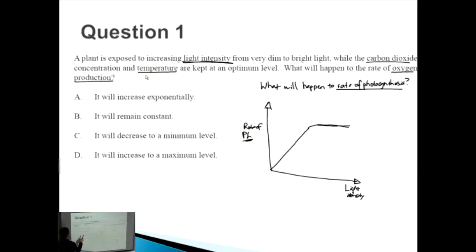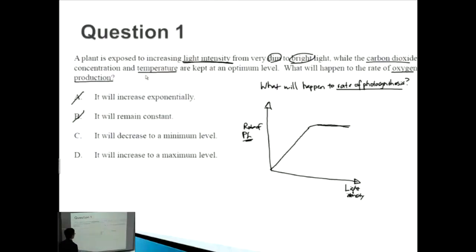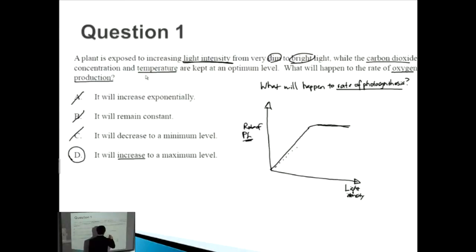So what will happen to the rate of photosynthesis as measured by rate of oxygen production? Option A — it will increase exponentially — is incorrect because we described a linear increase. Option B — it will remain constant — is incorrect because increasing light from dim to bright removes the limiting variable, so photosynthesis rises. Option C — it will decrease to a maximum level — is wrong. The correct answer is D: it will increase to a maximum level, which matches the linear increase that then tops off.